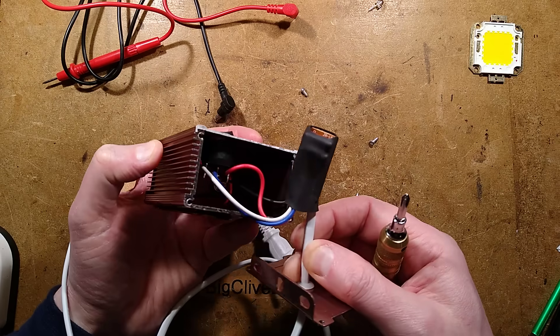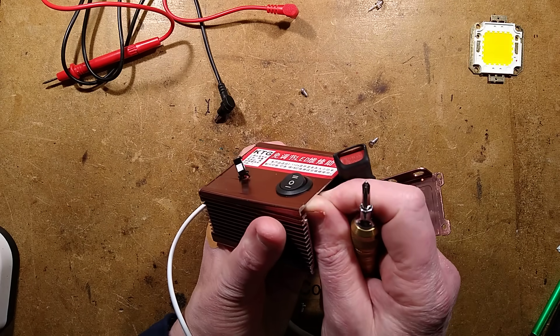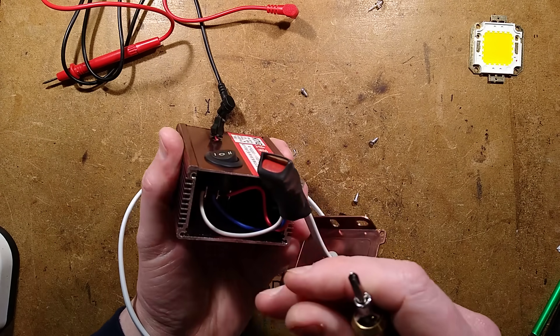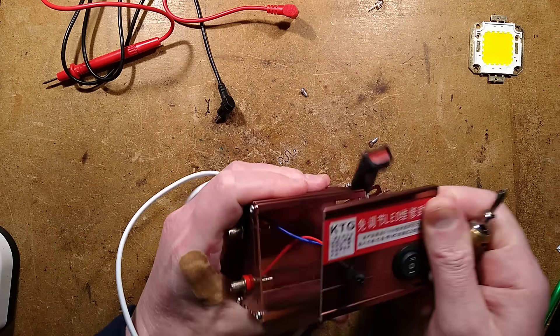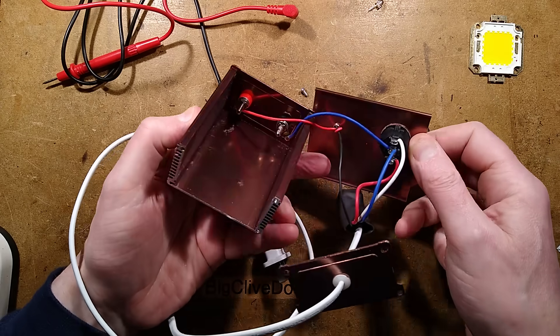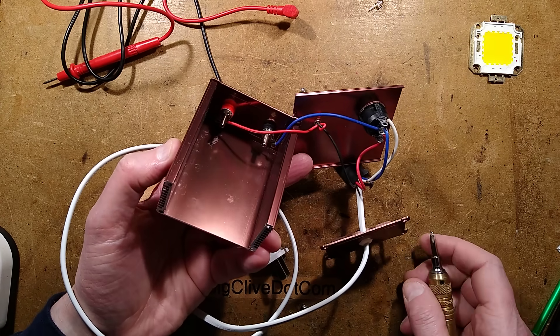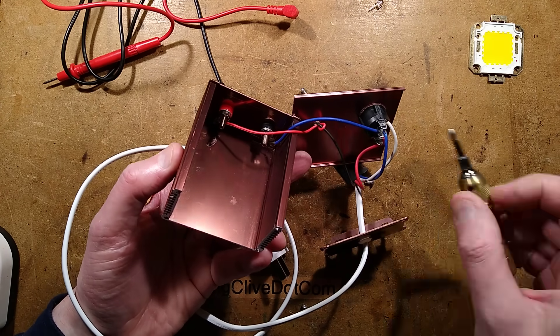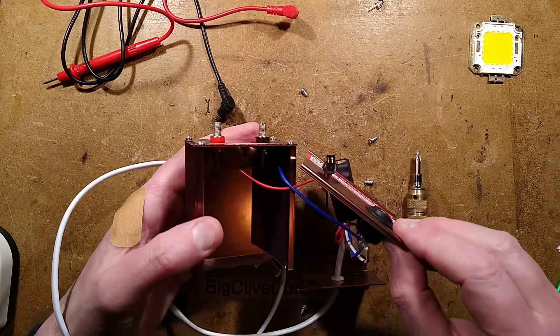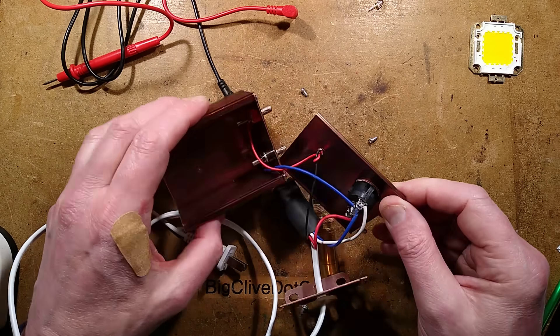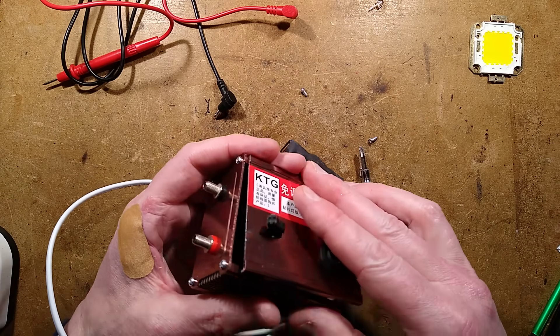There is a potted module inside here with a bit of heat shrink over it. Exciting. Oh, the top of that does unclip. This is going to let us see a bit more. Is it going to unclip completely? Yeah, it's unclipped completely. Oh, you know what? The LED is in series with the output. See, that would have been useful to know. Right. Tell you what. Let's try this again, shall we? Now that we know what's going on.